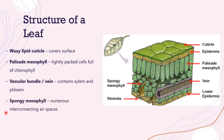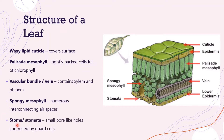Then we have our spongy mesophyll, which is full of numerous interconnecting air spaces — we'll see why that's important in a minute. And then we have our stoma (singular) or stomata (plural). These are small pore-like holes at the lower epidermis, on the bottom surface of the leaves, and they are controlled by guard cells, which control the size of these stomatal pores.